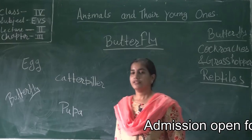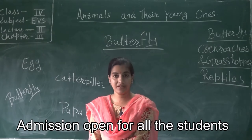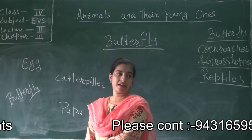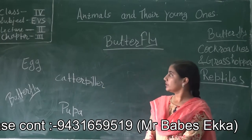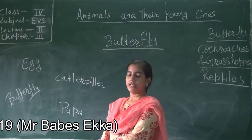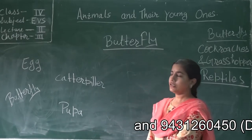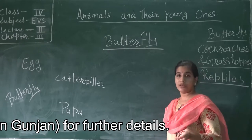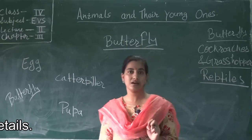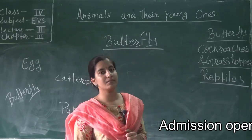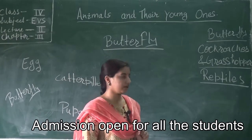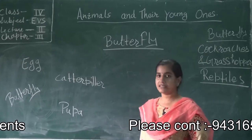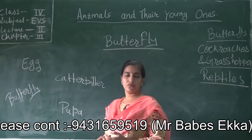Good morning everyone. Today I am going to teach you the subject EVS. This is the lecture for class 4, chapter number 3, lecture number 2. In the previous lecture I already gave you the description that there are mainly two types of animals — some animals lay eggs and some animals give birth to their young ones. I already discussed about a few animals that lay eggs.